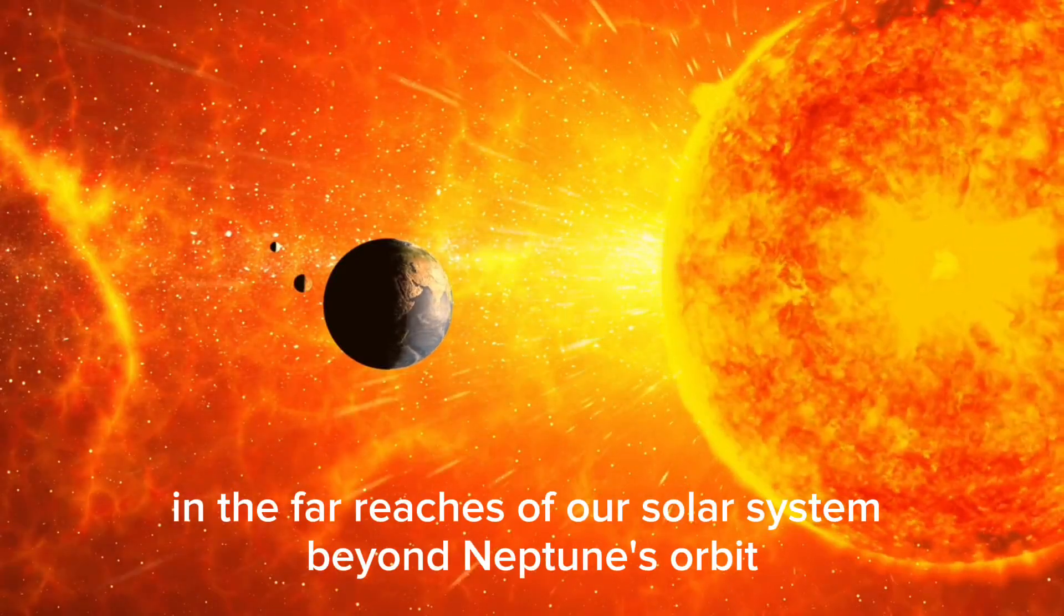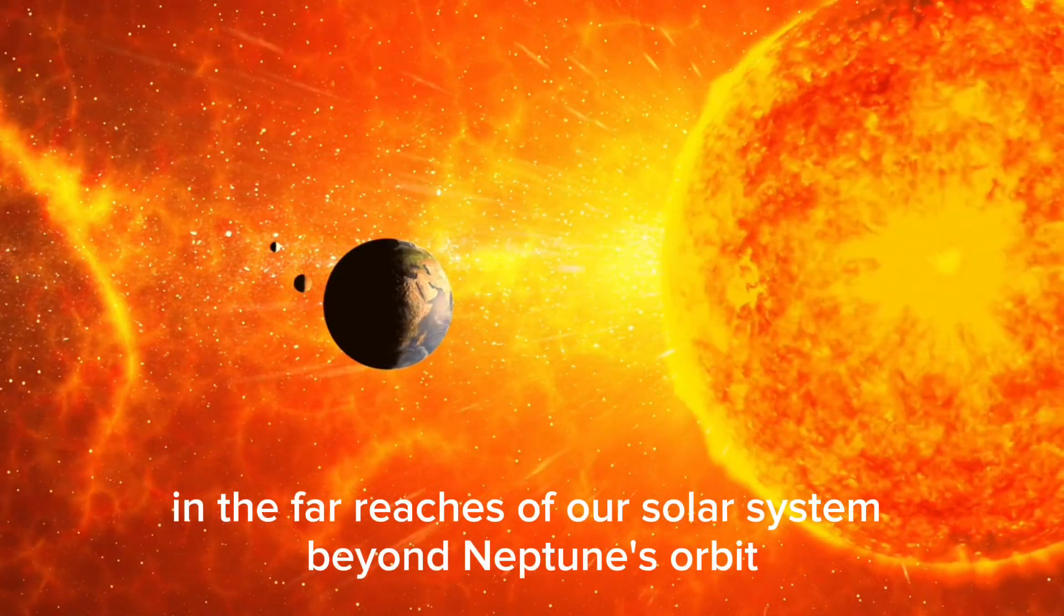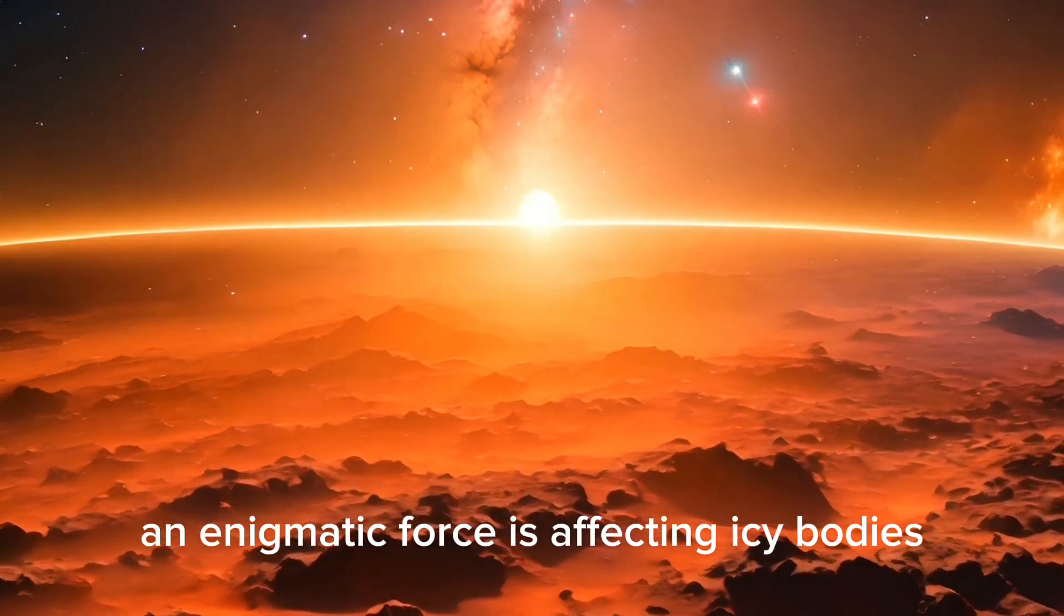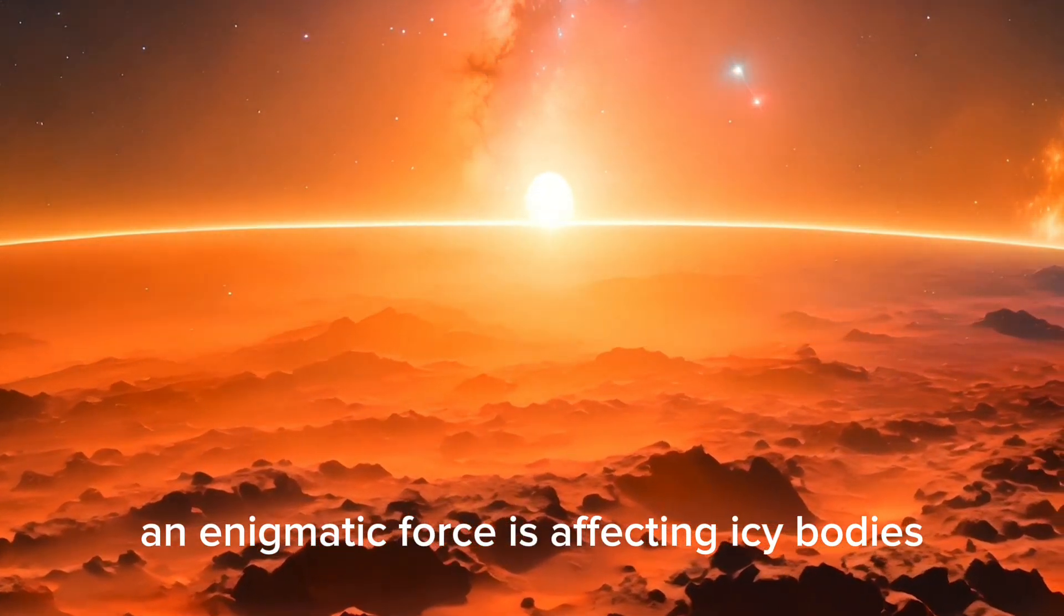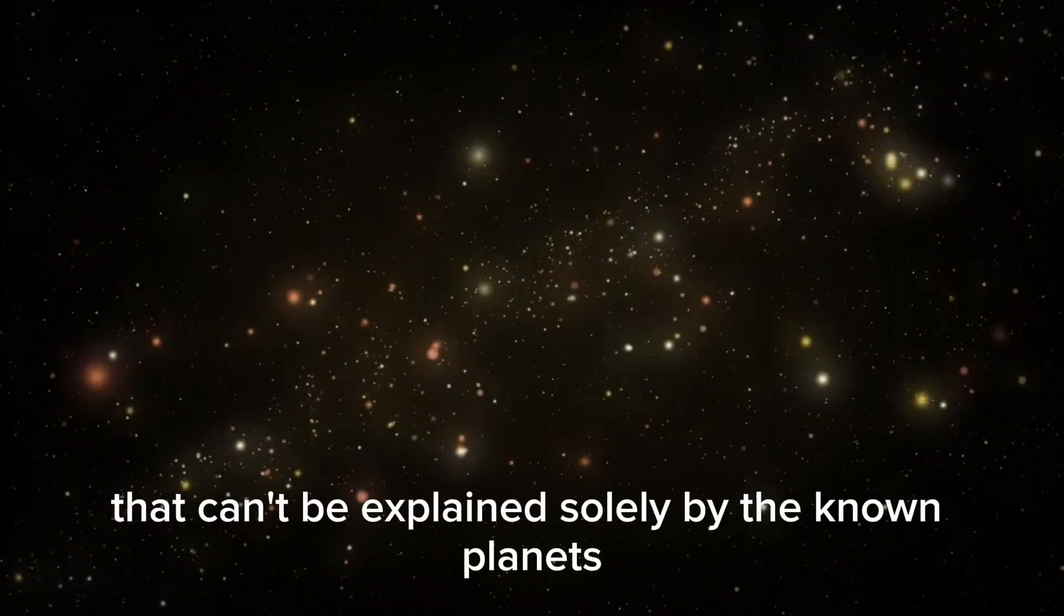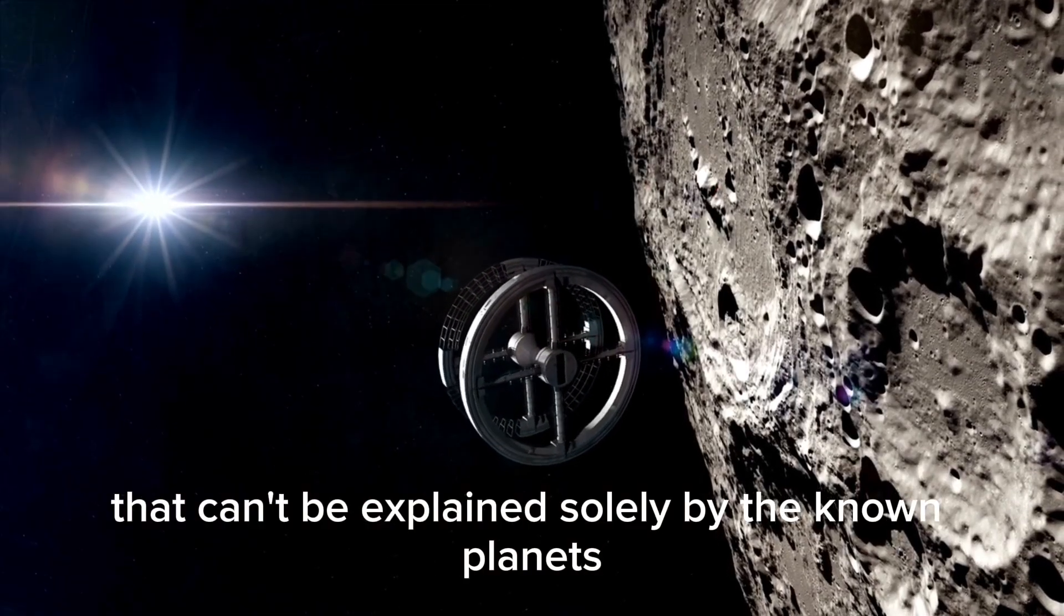In the far reaches of our solar system, beyond Neptune's orbit, something peculiar is happening. An enigmatic force is affecting icy bodies, causing groups of these objects to have unusual orbits that can't be explained solely by the known planets.